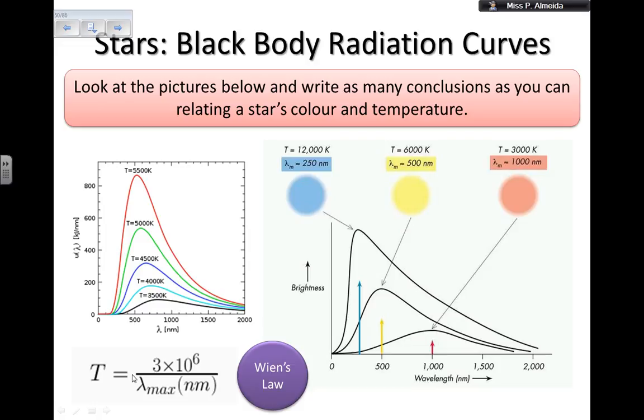Now all stars are black body radiation. So you can assume that a star is a black body and that it will give you a black body radiation curve. And this is how they look like.